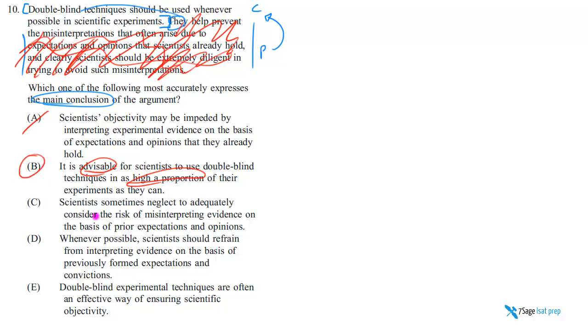C says, scientists sometimes neglect to adequately consider—I mean, I'm sure this is probably why they're advising us to use double-blind studies, but this doesn't paraphrase 'you should use double-blind studies,' which is what B says.